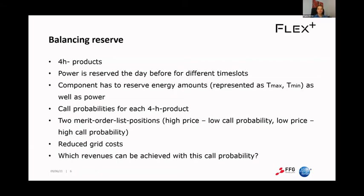For the balancing reserve market, the power has to be reserved the day before for each time slot, and the component must reserve not only the power but also the energy amount — so maximum or minimum temperature limits must not be violated. We assume call probabilities for each four-hour product. The optimizer can choose between two merit order positions: bid at a low price with a high call probability, or a high price with a low call probability. For the balancing reserve we assume reduced risk costs, and the revenues achievable with a certain call probability influence the objective function and are maximized.